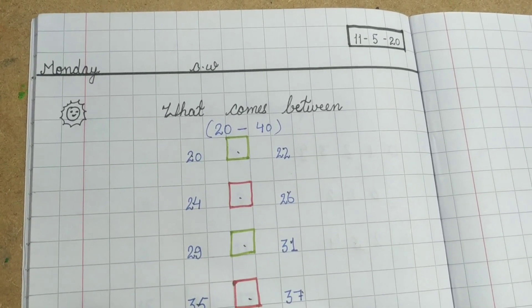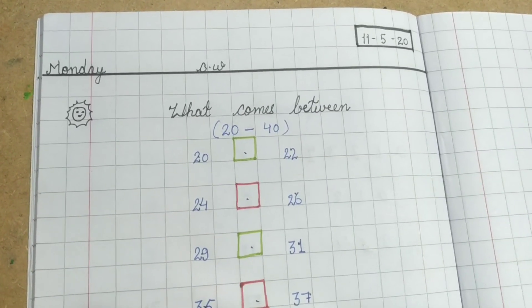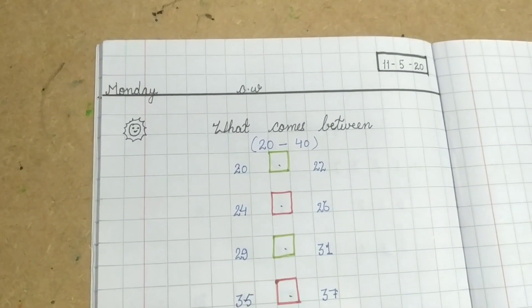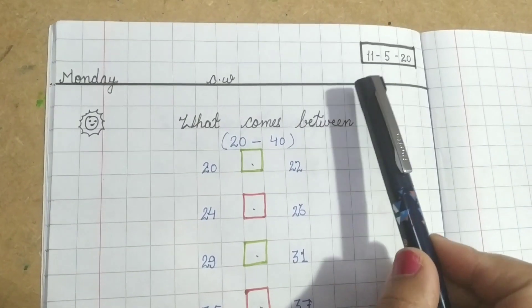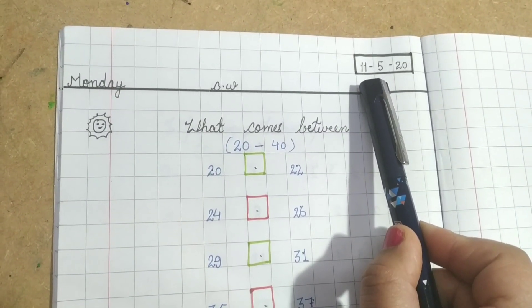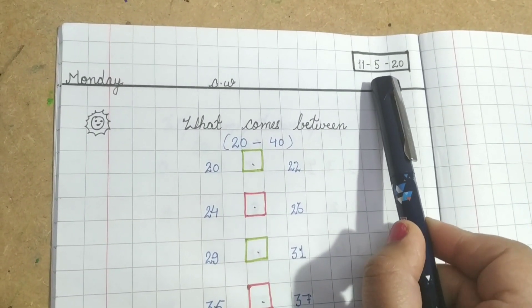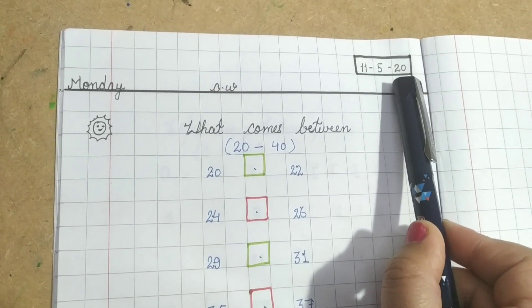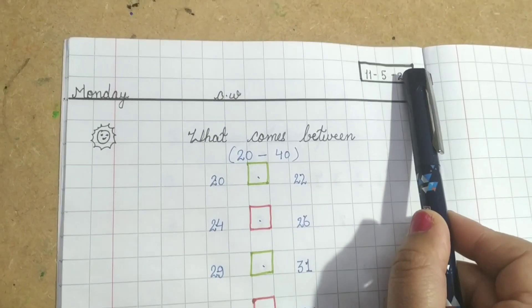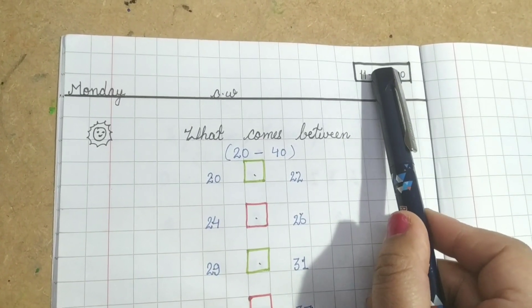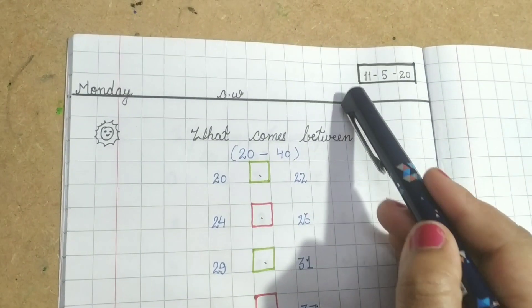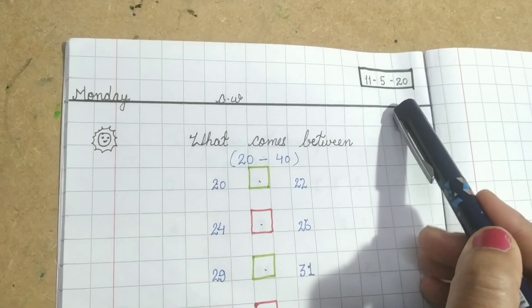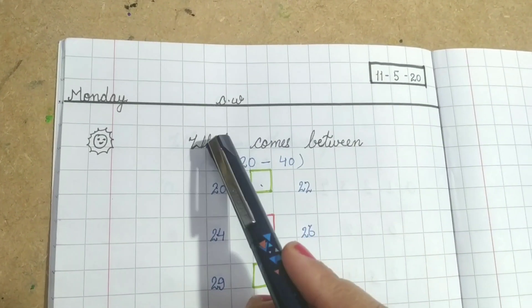First of all, you have to write the date. 11 is the date, 5 is the May month, and 20 is the present year. So this is the format of writing the date: 11-5-20.